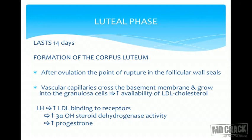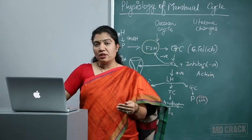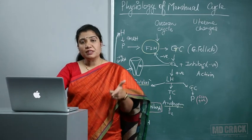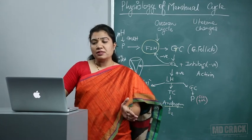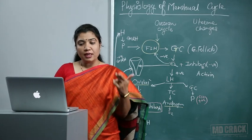After the follicle is released — after ovulation — the luteal phase starts, lasting 14 days. Formation of the corpus luteum: after ovulation, the point of rupture in the follicle wall seals, vascular capillaries cross the basement membrane and grow into the granulosa cells, increasing availability of LDL cholesterol. LH increases LDL binding to receptors, increases 3-alpha-hydroxy steroid dehydrogenase activity, and increases progesterone. The corpus luteum secretes four hormones: progesterone, estrogen, inhibin, and — in case of pregnancy — relaxin.